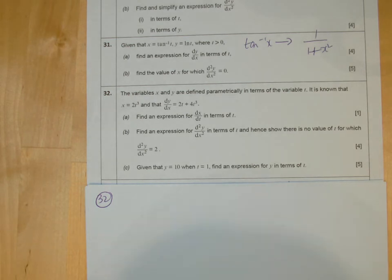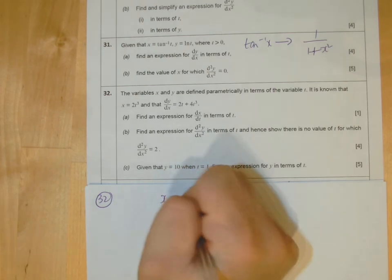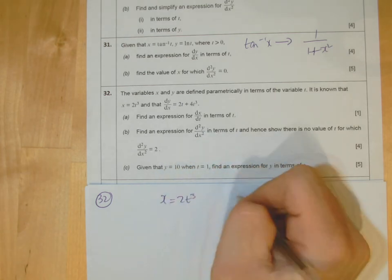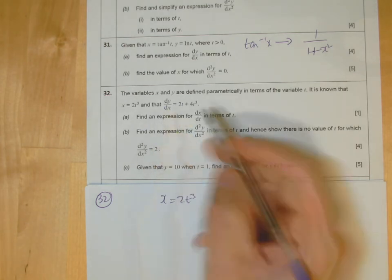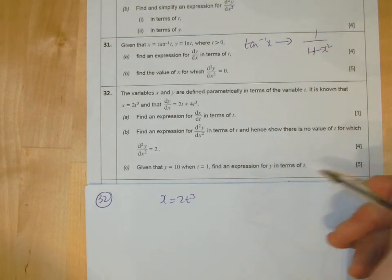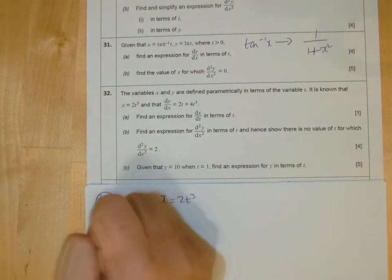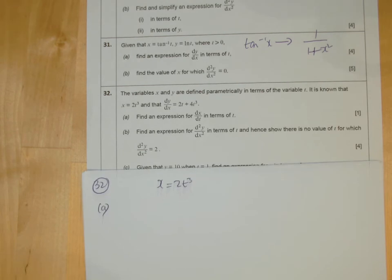Question 32. We've got variables here, x and y, to find parametrically. We've got x equals 2t cubed, and then we've got dy dx. That's interesting. They're not telling us what y is. It's a slightly different question this time around.